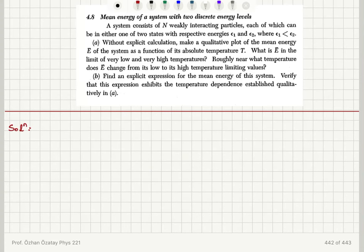Mean energy of a system with two discrete energy levels. A system consists of N equally interacting particles, each of which can be in either one of two states with respective energies epsilon 1 and epsilon 2, where epsilon 1 is less than epsilon 2. We need to qualitatively plot the mean energy E-bar as a function of absolute temperature, find its limits at very low and very high temperatures, and determine roughly near what temperature E-bar transitions between those limits. Then find an explicit expression and verify it.